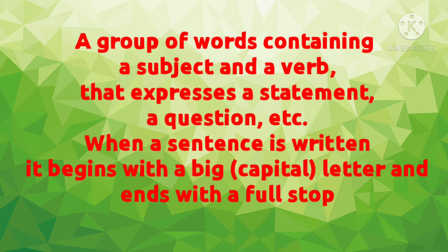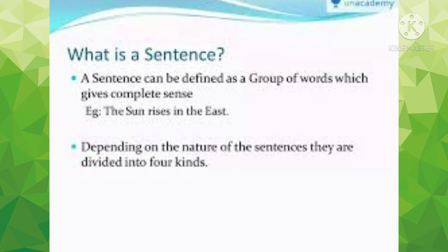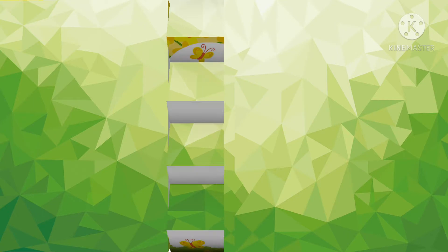So children, what is a sentence? A sentence is a group of words that conveys complete sense. It always begins with a capital letter and ends with a punctuation mark. And it must have a noun or a pronoun and a verb. If these three elements are missing, it means that is not a sentence.